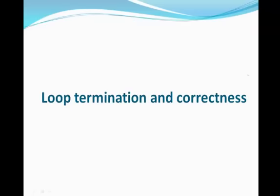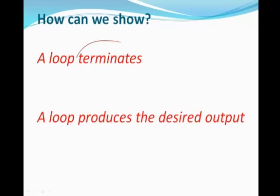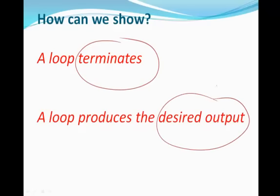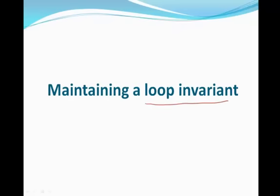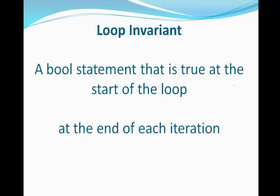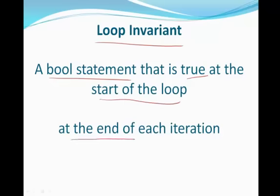Now, loops are really important things in programming. We write a loop to iterate over a set of statements again and again. We need to assure that the loop will terminate and also that the loop will produce the desired output. In order to get there, we will start with a concept called a loop invariant. A loop invariant is a boolean statement that is true at the start of the loop and then at the end of each iteration. This means the loop invariant must be true immediately after you exit the loop.